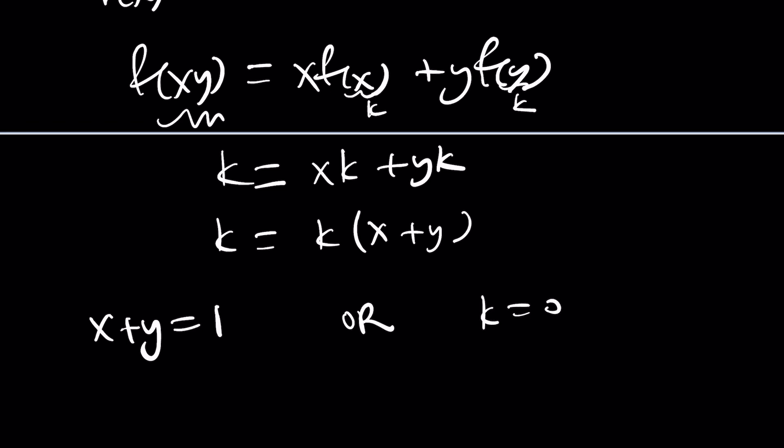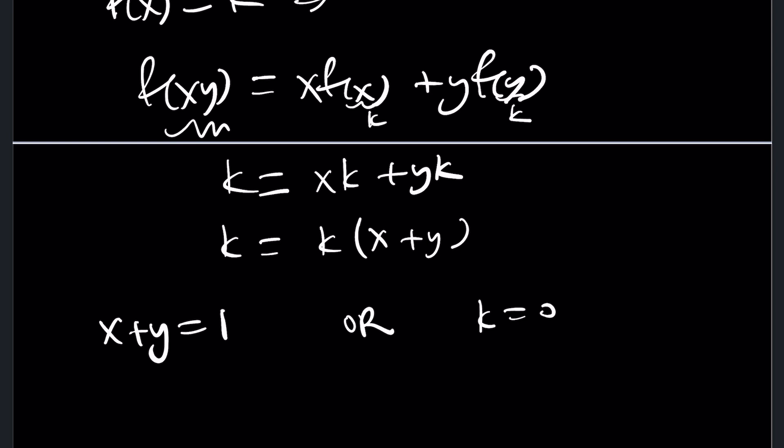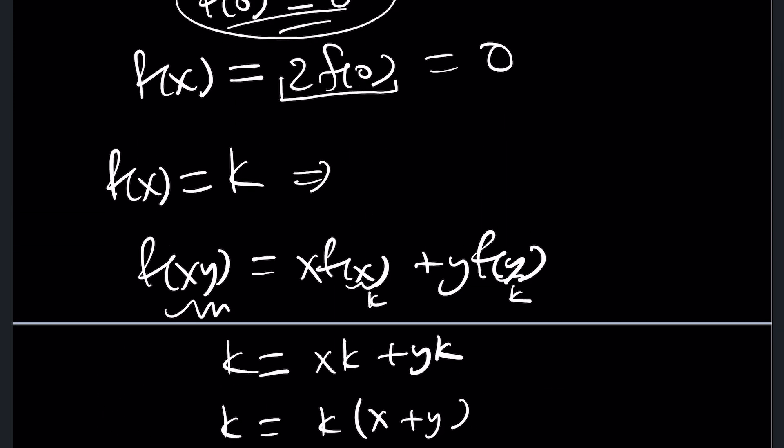But of course, x plus y is not always one because x and y are arbitrary variables. This is not true for all x and y. For all x and for all y element of real numbers, this is false. So k equals zero must hold or must be satisfied, which means we assumed f of x equals k and k is zero. So f of x is zero. Sometimes they'll write it like this with three lines, which means f of x is zero everywhere, which is identically zero.